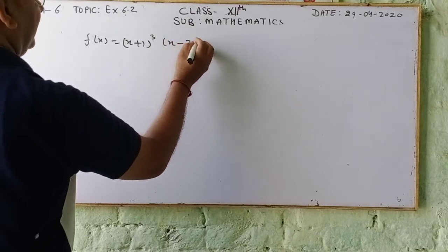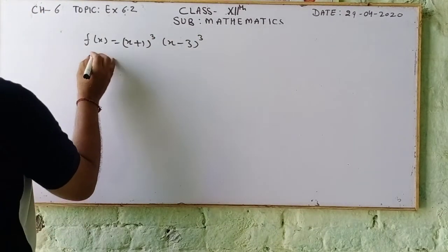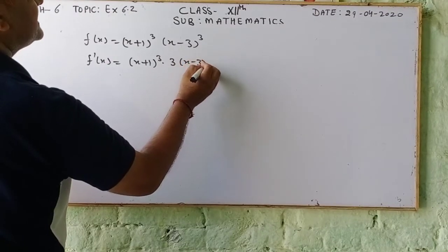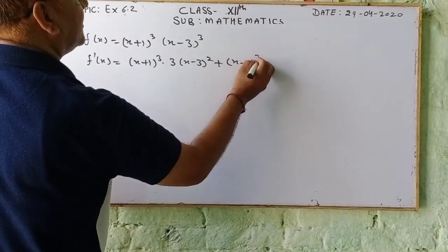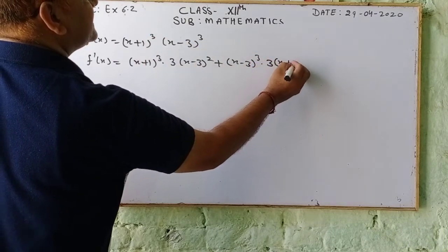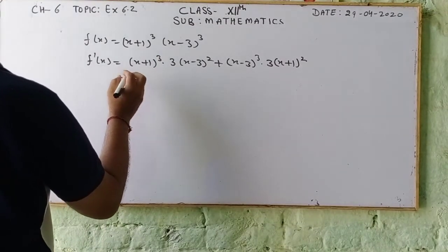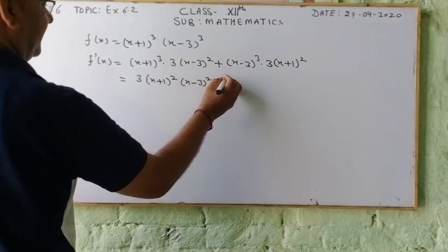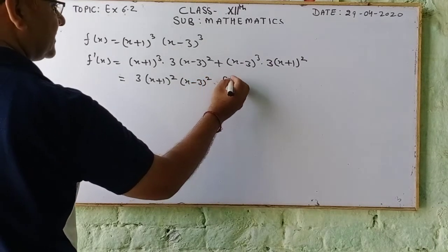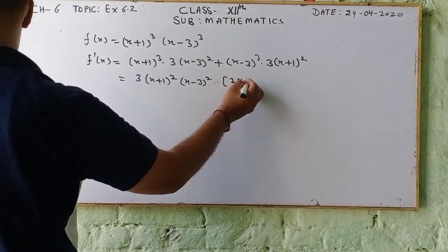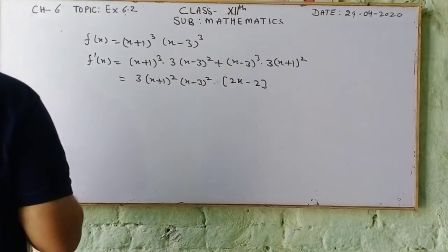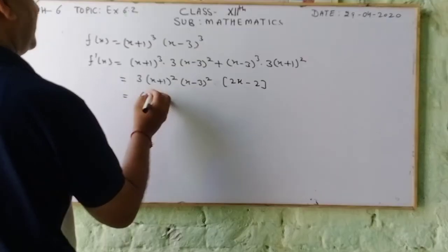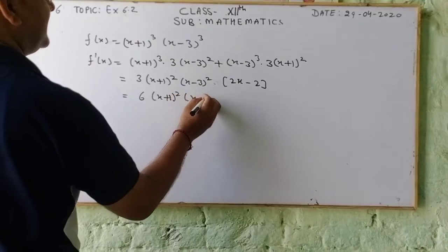First, we write down f'(x) using the product rule: (x+1)³ as it is, multiplied by the derivative of (x-3)³ which is 3(x-3)², plus (x-3)³ as it is multiplied by the derivative of (x+1)³ which is 3(x+1)². We then combine 3(x+1)² and (x-3)², taking out common factors to get 6(x+1)²(x-3)²(x-1).